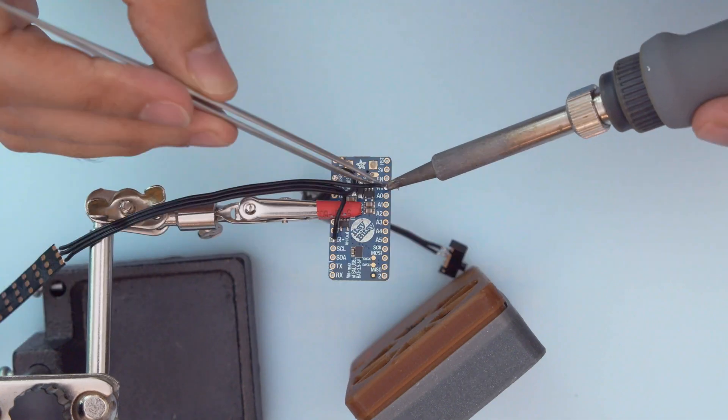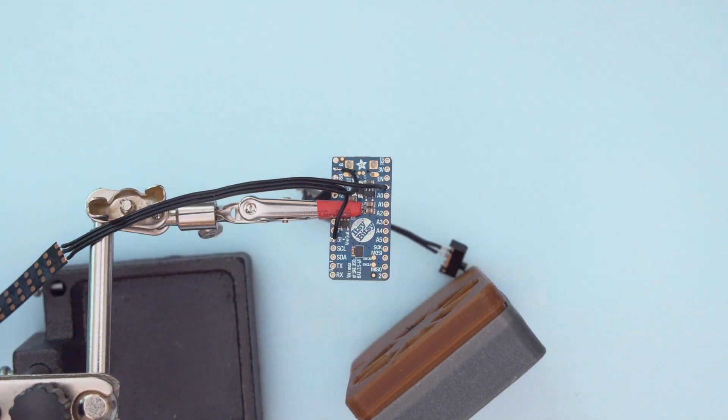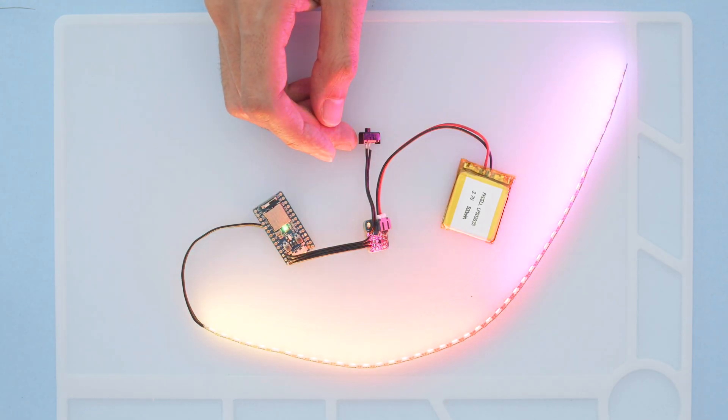The NeoPixel strip is wired to the pins on the bottom of the board so we can share the ground pin. With everything wired up, we can test the circuit out before installing it into the case.